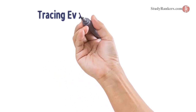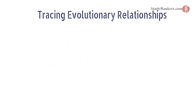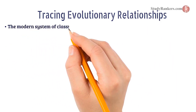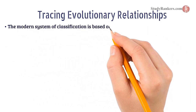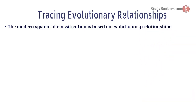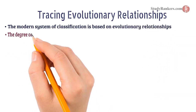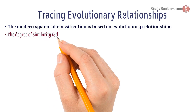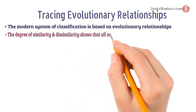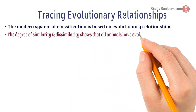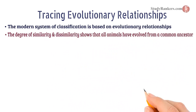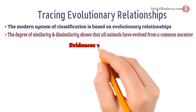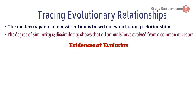Our next topic is tracing evolutionary relationships. The modern system of classification is based on evolutionary relationships. The degree of similarity and dissimilarity shows that all animals have evolved from a common ancestor. Such evidences of evolution are as follows.